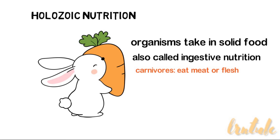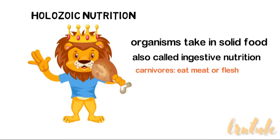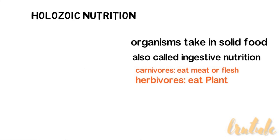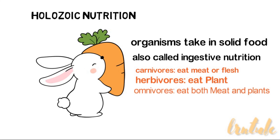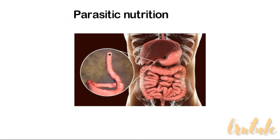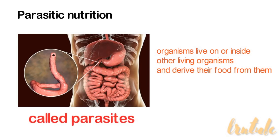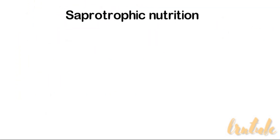The three types of holozoic organisms are carnivores, which eat only meat or flesh; herbivores, which eat only plants; and omnivores, which eat both plants and flesh. Parasitic nutrition is when organisms live on or inside other organisms and derive their food from them. These organisms are called parasites.